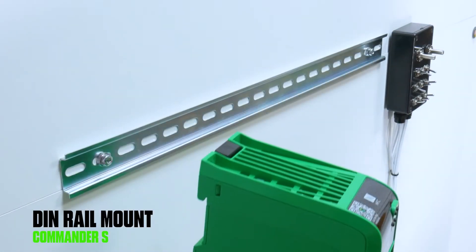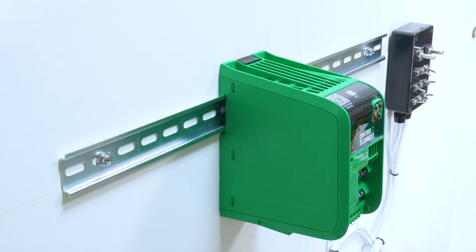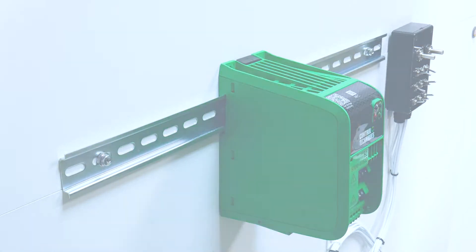To mount the drive on DIN rail, press the DIN rail release clip, slide into position, and then release the clip once the drive is secure.